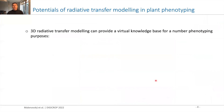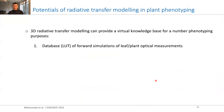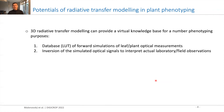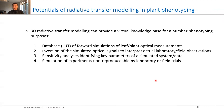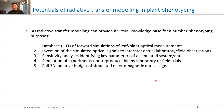To conclude, I would like to stress the potentials of radiative transfer modeling for a number of phenotyping purposes. First of all, we can use this modeling for creating databases or lookup tables of forward simulations of any plant or leaf optical measurements. These databases can be used for inversion of actual laboratory or field observations, as well as for sensitivity analysis identifying key parameters. We can produce simulations of experiments that are non-reproducible by laboratory or field trials — so they can only be done virtually. We can provide full 3D radiative budget of any electromagnetic signal, optimize sensor and platform technical specifications, and much more. Thank you for your attention.